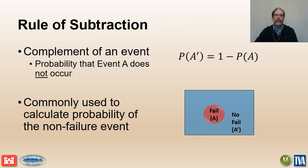The rule of subtraction is commonly used in risk analysis and in event tree analysis to calculate the probability for a complementary event. For example, the probability for the non-failure event must be equal to 1 minus the probability of the failure event. Similarly, the probability of successful intervention must be equal to 1 minus the probability of unsuccessful intervention.